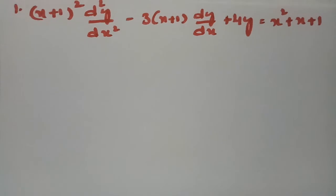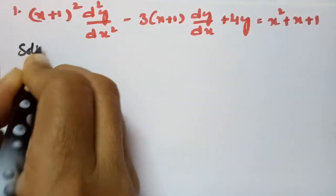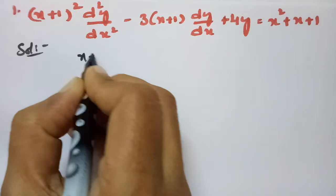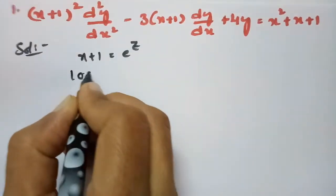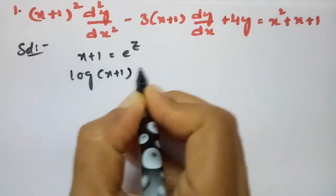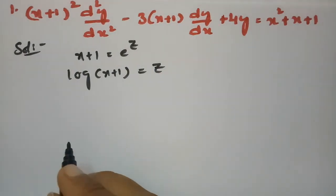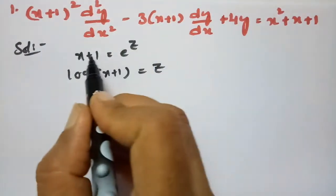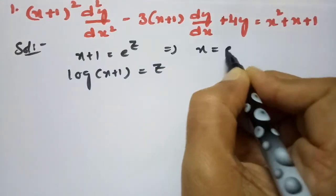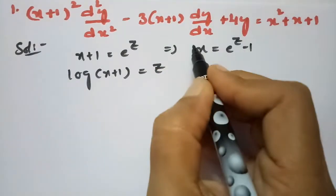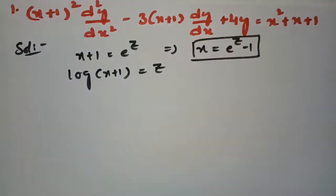The substitution we need to make: let x + 1 = e^z, so log(x + 1) = z. From this, x = e^z − 1. Please remember this, as we have x on the right-hand side.